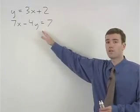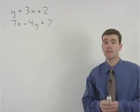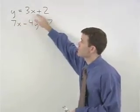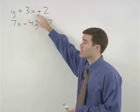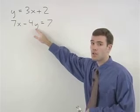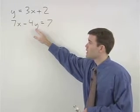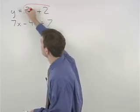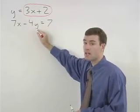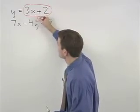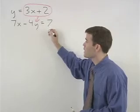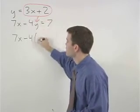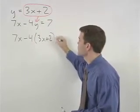To solve this system of equations by substitution, the idea is simple. Since our first equation tells us that y equals 3x plus 2, we can substitute a 3x plus 2 in for the y in our second equation. In other words, since y means the same thing as 3x plus 2, we can replace the y in the second equation with a 3x plus 2. Our second equation then becomes 7x minus 4 times parentheses 3x plus 2 equals 7.